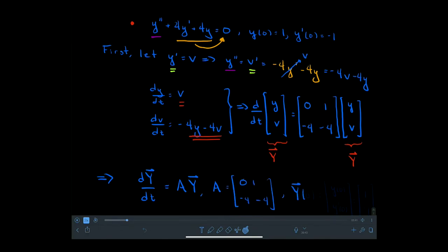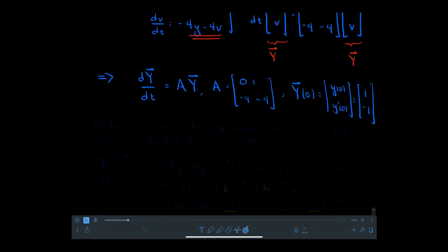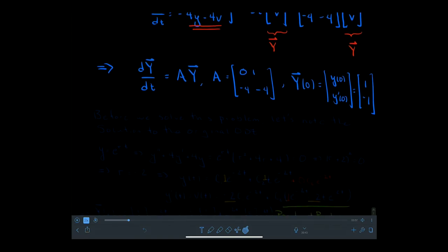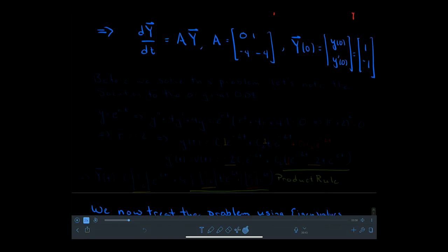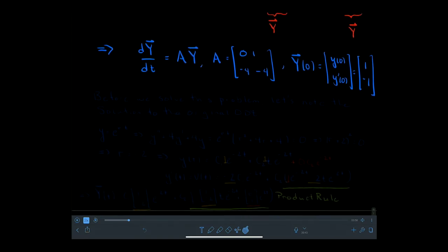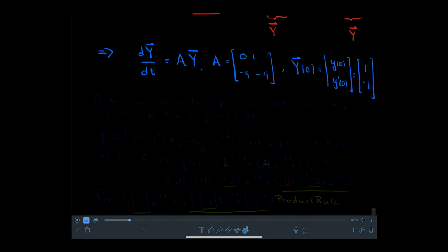The initial condition Y(0) is equal to [y(0), y'(0)] = [1, -1]. So that is the second-order ODE restated as a first-order linear system, where instead of tracking just displacement, we're tracking both displacement y and velocity v associated with this mass-spring system.